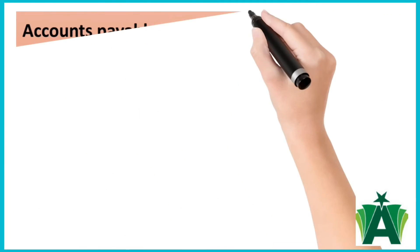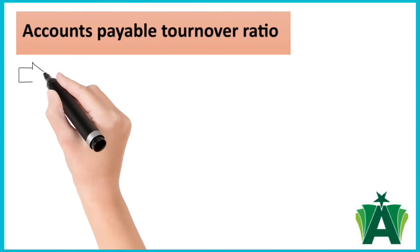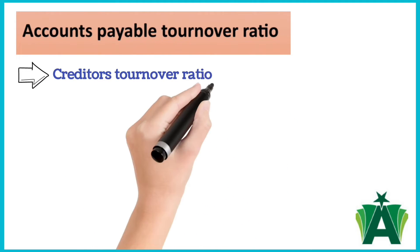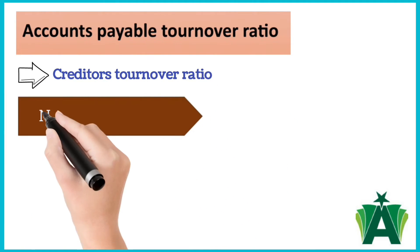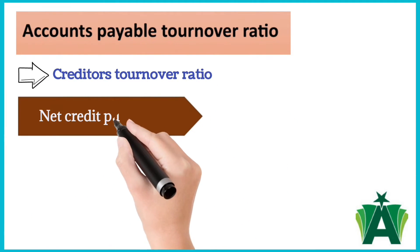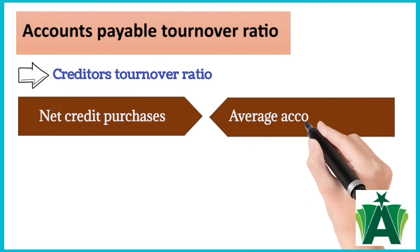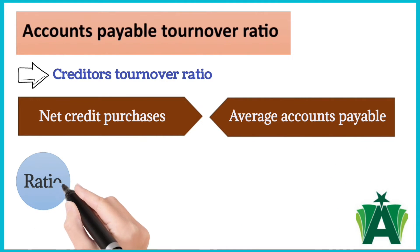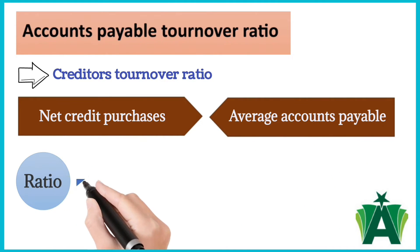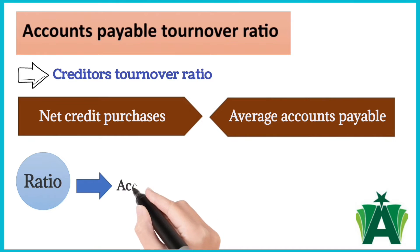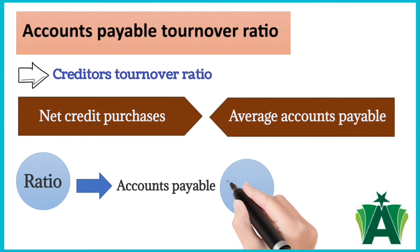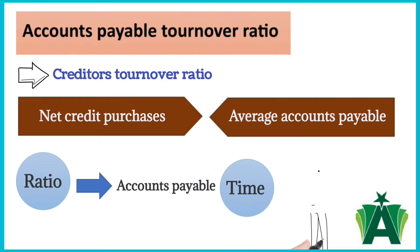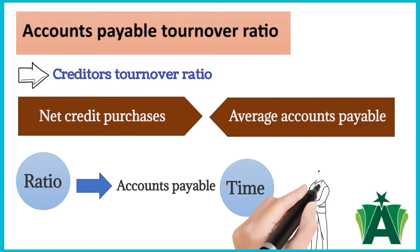Accounts Payable Turnover Ratio is also known as the creditors turnover ratio. It is the relationship between annual credit purchases and average accounts payable. This ratio measures how efficiently a company manages its accounts payable, indicating the average number of times a company pays off its suppliers within a specific period.